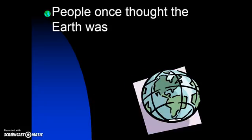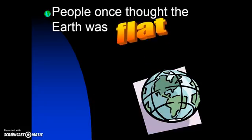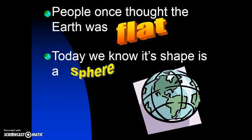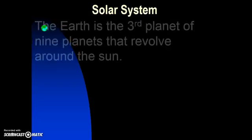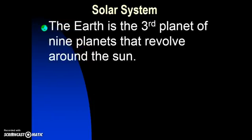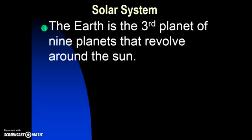First thing that we need to know is that people once thought the Earth was actually flat. Eventually we figured out that it's actually a sphere. We also know that Earth is part of a solar system and it is the third planet from the Sun. There's a total of nine planets and they all revolve around the Sun.